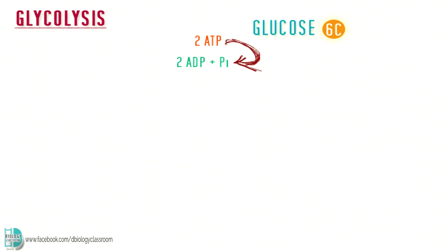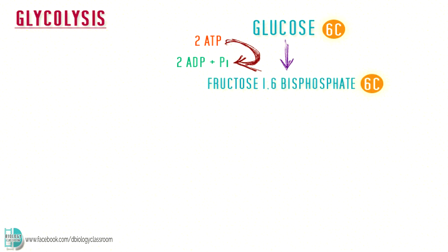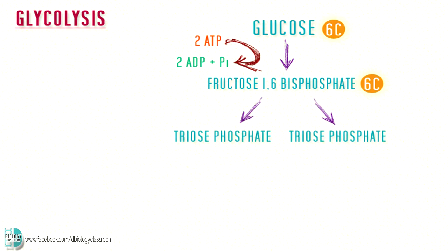First, two ATP are used to phosphorylate glucose. It is converted into fructose 1,6-bisphosphate. The activated sugar then splits into two triose phosphate molecules, each with three carbons.